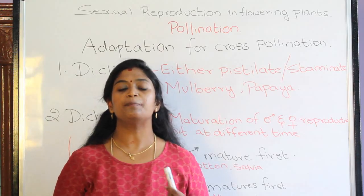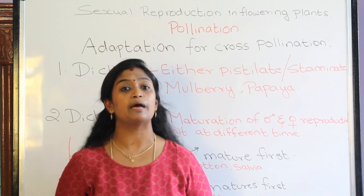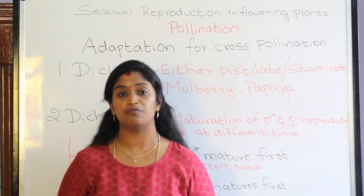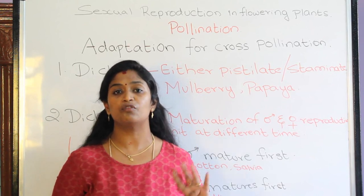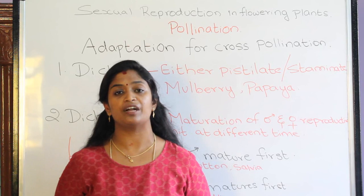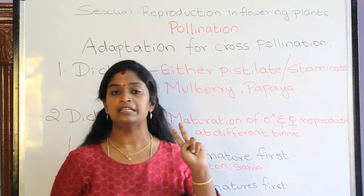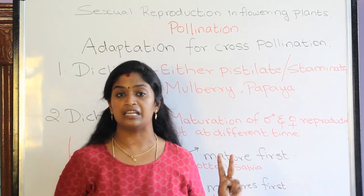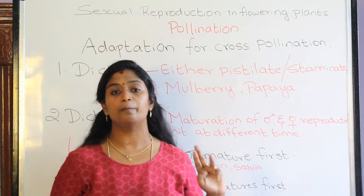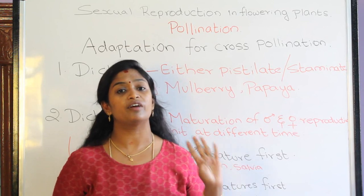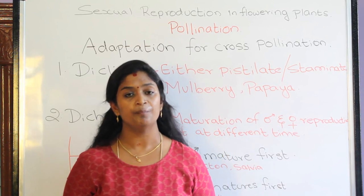Hello everyone. In the previous video we studied about the adaptations for self-pollination, where we saw four different types of adaptation. The first adaptation is homogamy, the second one is cleistogamy, the third is geocarpy, and we finally saw the relationship of anther and the stigma.